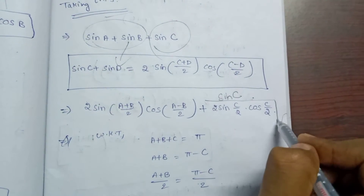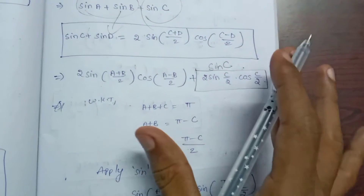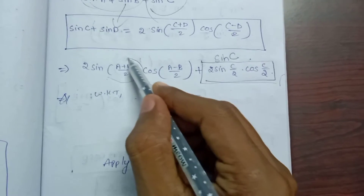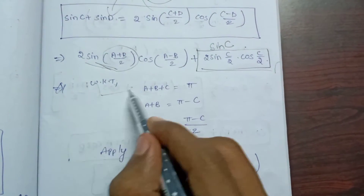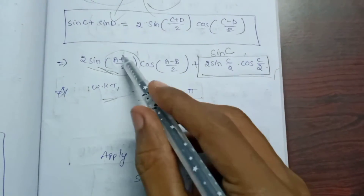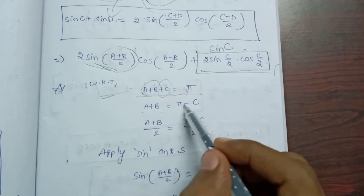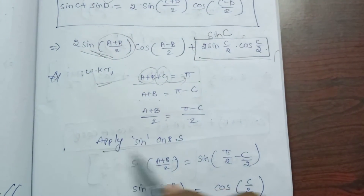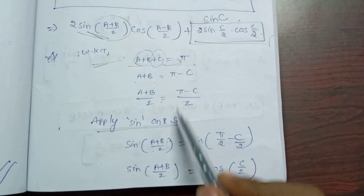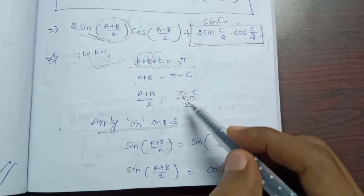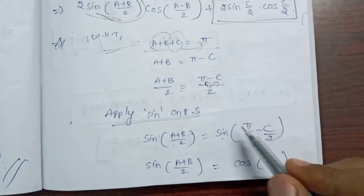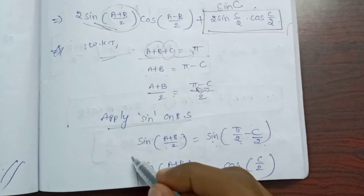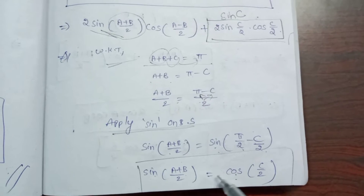We know that A plus B plus C equals pi, so A plus B equals pi minus C. Applying sine to both sides, sin((A+B)/2) becomes sin((pi minus C)/2). Using sin(pi/2 minus theta) equals cos(theta), we get sin((A+B)/2) equals cos(C/2).